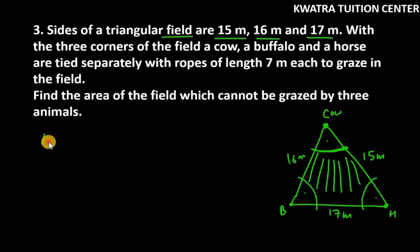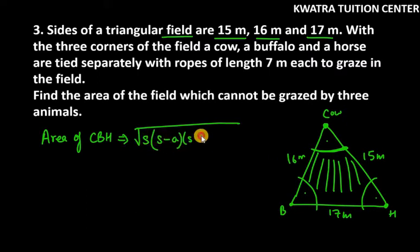First we will take the area of triangle CBH. So now you can find area of triangle CBH with the help of Heron's formula. Why we need to use Heron's formula here? Because you can see that three sides are different. This is a scalene triangle. So therefore we need to find this.